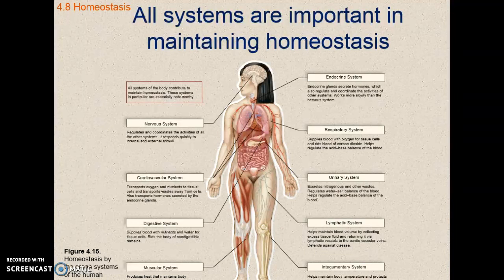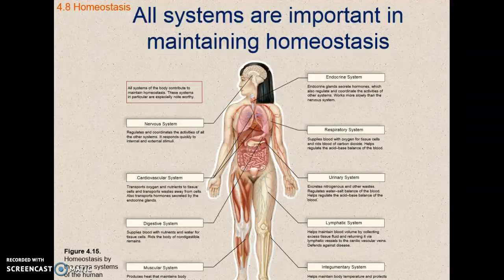The digestive system supplies blood, nutrients, and water for the tissues and rids the body of non-digestible material. With your GI tract, if you get constipated and aren't moving waste out of your body, it just sits there in the intestinal tract. Your intestinal tract will start absorbing toxins and garbage, and you can start feeling very cruddy. That can have an effect on your brain activity — there's a pretty common term called brain fog. Maybe it's your GI tract that's not working properly.